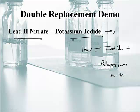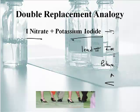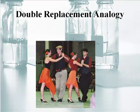Here's an analogy: think of two couples who go to a dance and trade partners. This guy decides he likes her, so they switch. That's how a double replacement reaction works — the ions trade partners. That's just to help you identify and know which type is which.